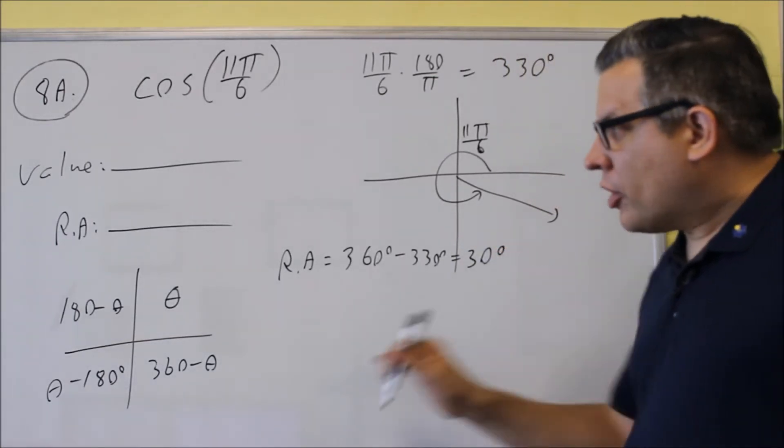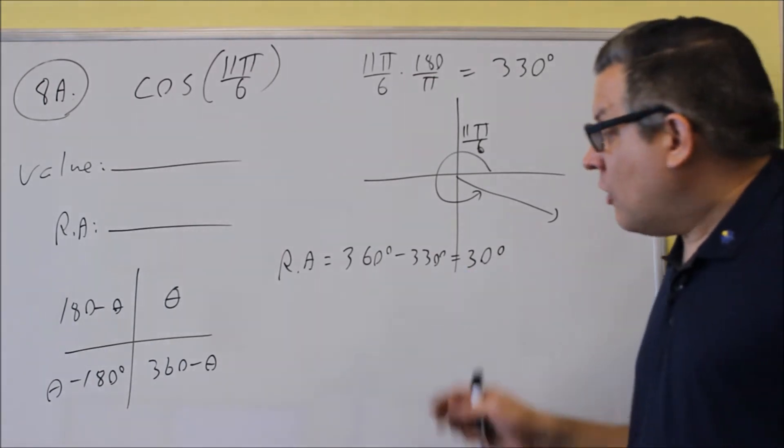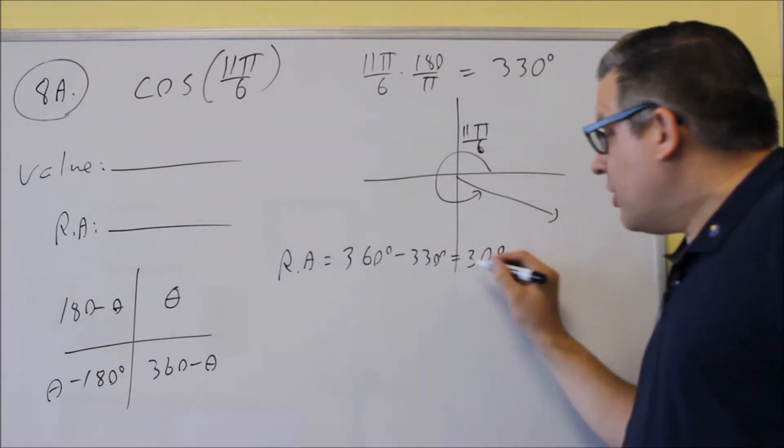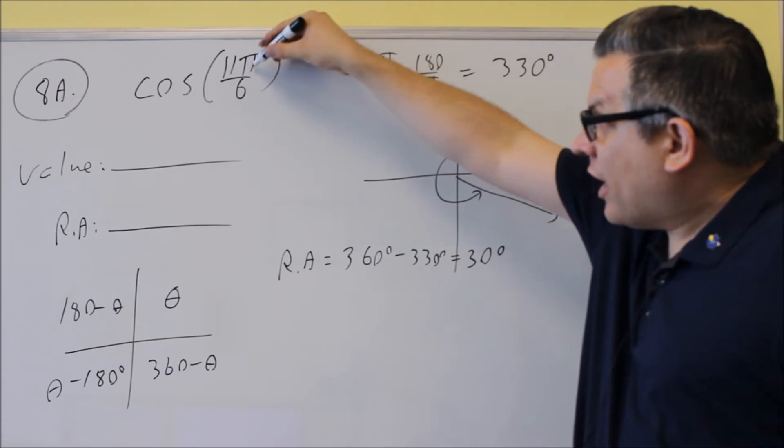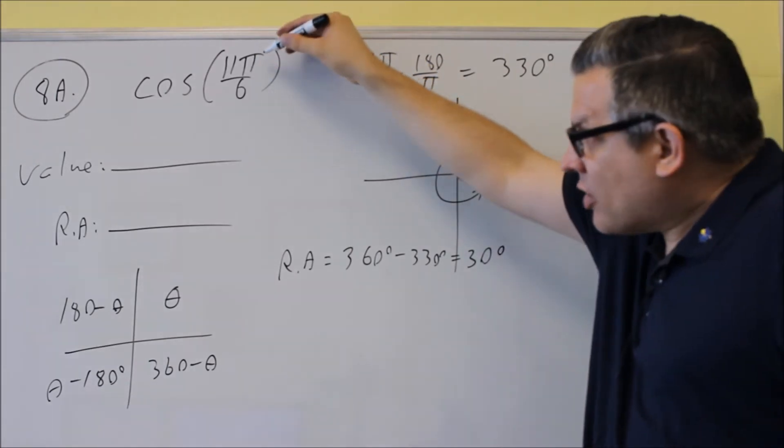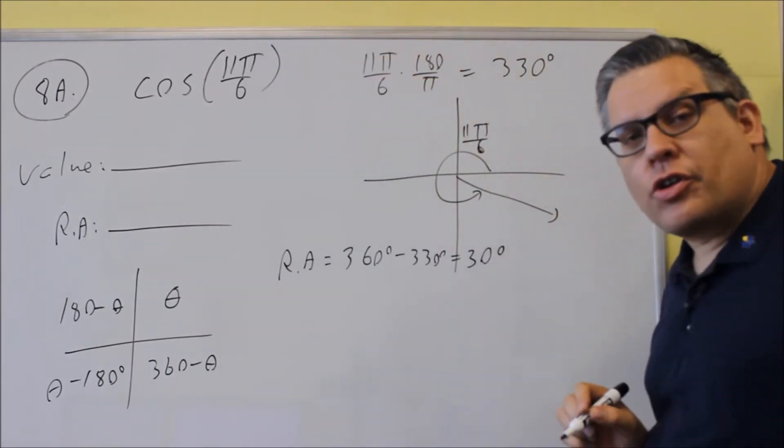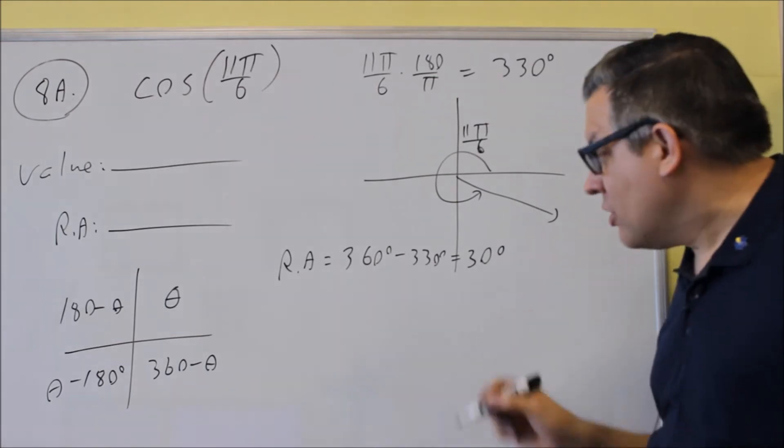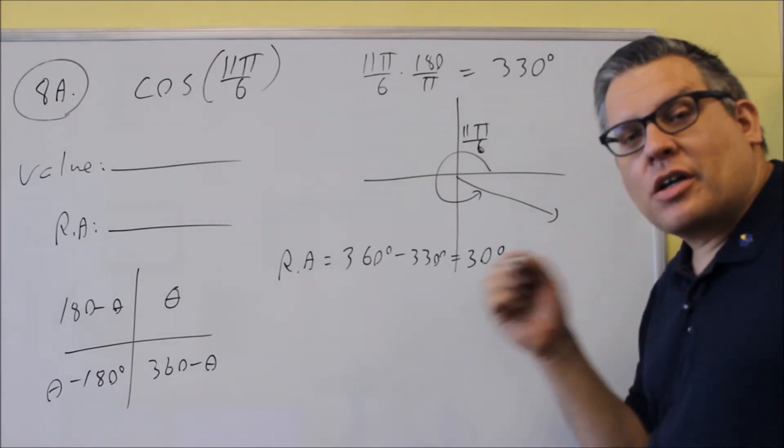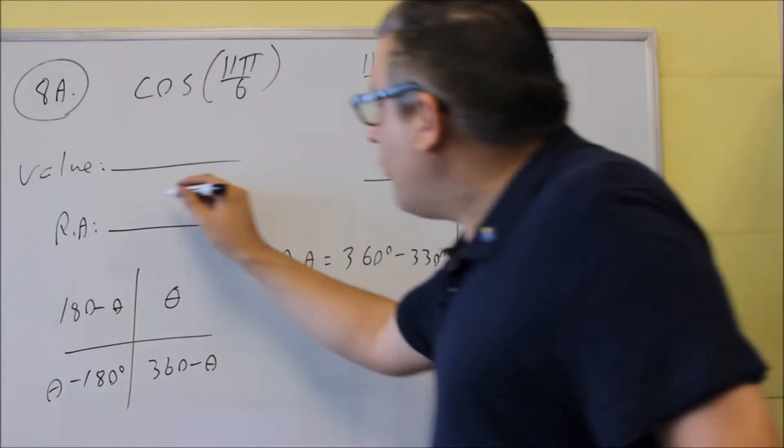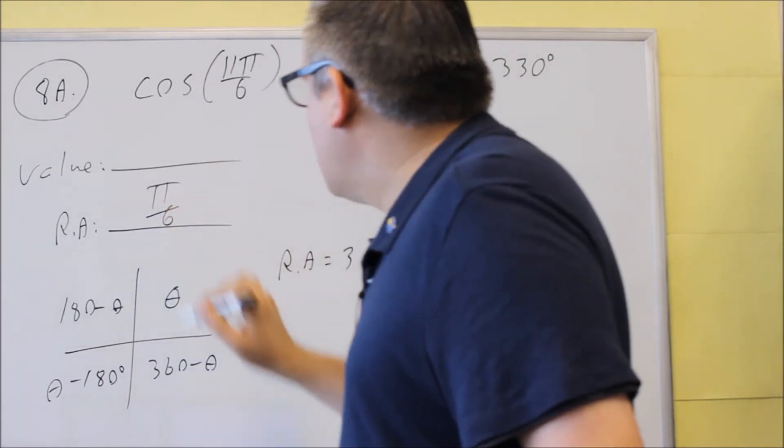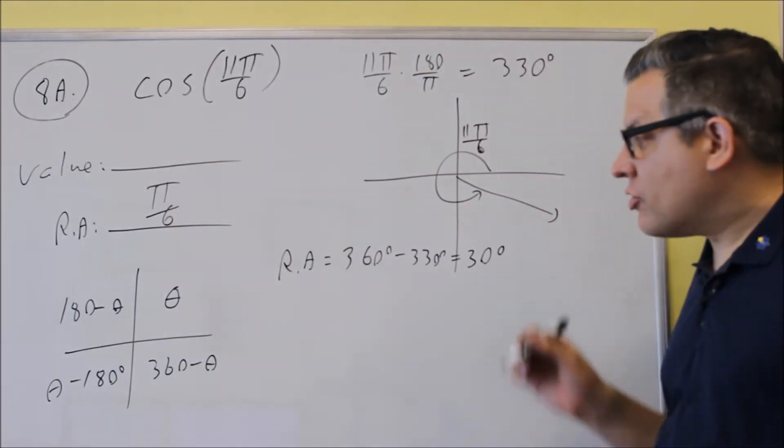Now, when we put our answer for the reference angle, we're going to express our answer in the same degree measurement as what it has inside here. So because that was in radians, we want to convert 30 degrees back over into radians. You can do that by multiplying by pi over 180, and you'll end up with pi over 6. So pi over 6 is your reference angle.